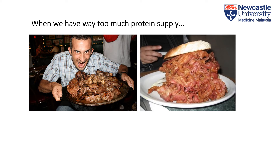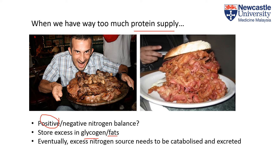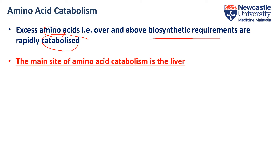What will happen when we have too much protein supply? Are we in a positive or in a negative nitrogen balance? The answer is positive balance. Initially, our body will try to store the excess in the forms of glycogen and fat molecules, but eventually this excessive nitrogen source must be catabolised and excreted out of the body. When we have too many amino acids, which is well above the biosynthetic requirements, they will be catabolised, and the main organ to do so is our liver.